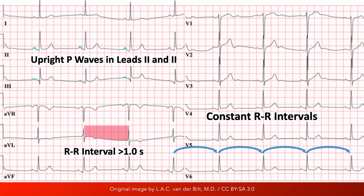So to quickly recap, with sinus bradycardia, an upright P wave of constant morphology precedes every QRS complex.